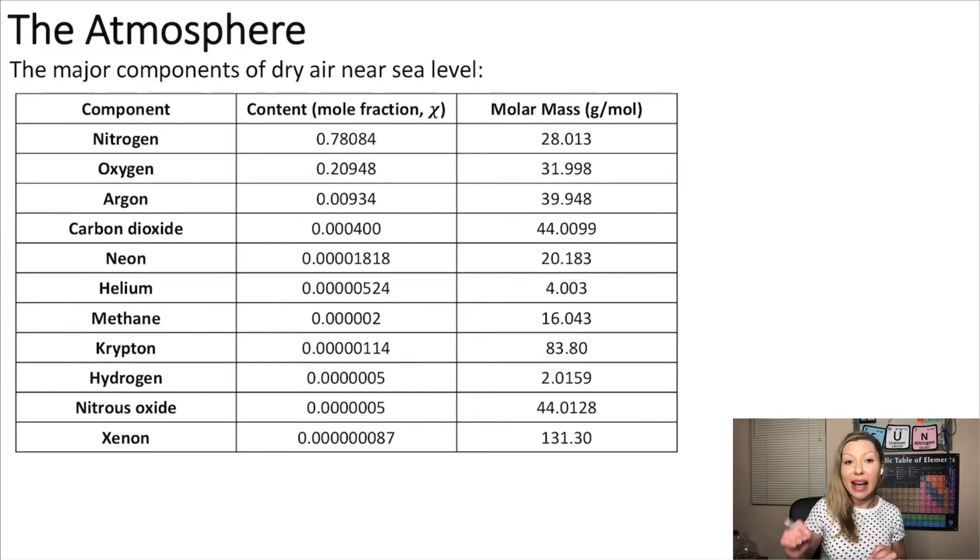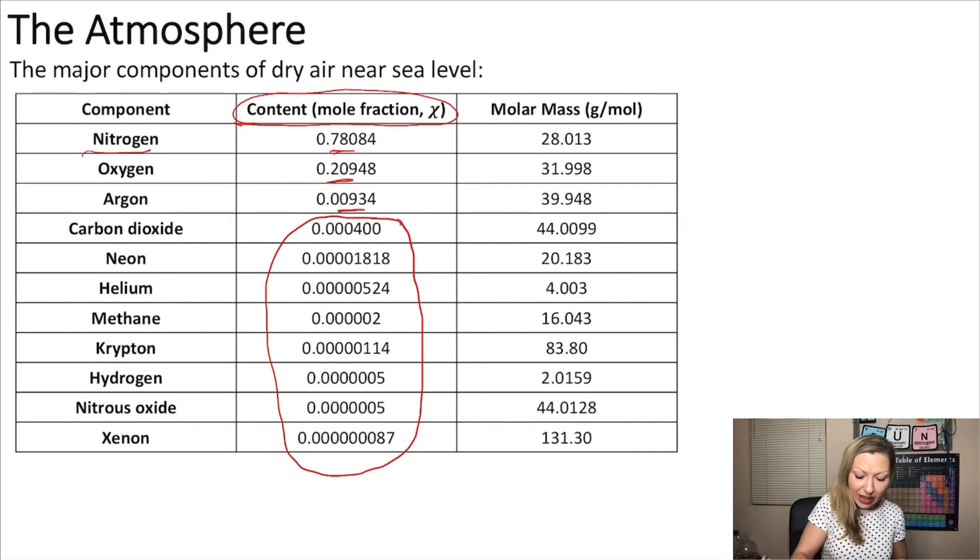Near sea level, we have mainly nitrogen at a mole fraction of 0.78, which is about 78% of the atmosphere. We have close to 21% oxygen, close to 1% argon, and everything else is in trace amounts.